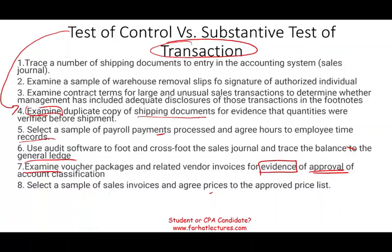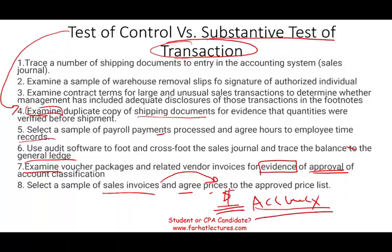The eighth example: select a sample of sales invoices and agree prices to the approved price list. When you see a dollar amount involved, lean toward substantive test of transaction. You're comparing the sales invoice prices to make sure the dollar amount is correct. Agreeing prices to the approved price list means you're determining whether the transaction is accurate. It's a substantive test of transaction, and the audit objective is accuracy.